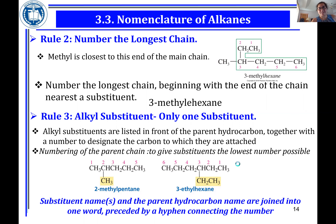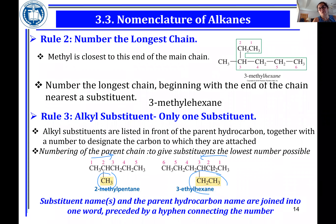Any questions about these examples? Basically, the methyl group on carbon two — number from the side closer to the branch. For the second example, there's only one branch, so number from the side closer to it. Since it's an ethyl group on carbon three with a total of six carbons in the main chain, the name is 3-ethylhexane.